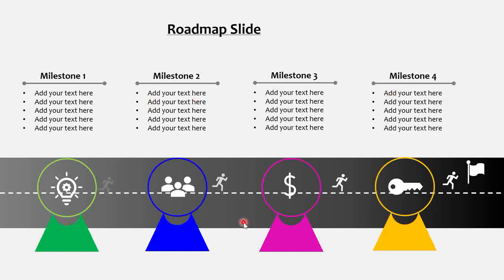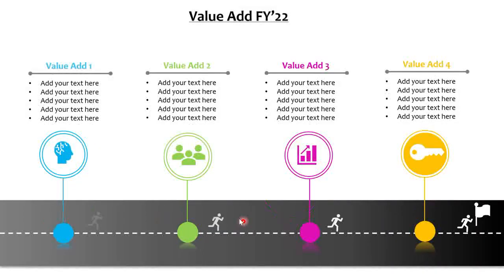I have another version of this roadmap slide as well, so we can use either of these versions. This slide can also be repurposed for different uses. For example, if you want to show the value a team has delivered, you can say value at one, two, three, and four and add a description — this shows a maturity path. You can also leverage this slide to showcase the contribution or accomplishments made. Various ways this slide can be used, and it leaves a remarkable message to your audience.